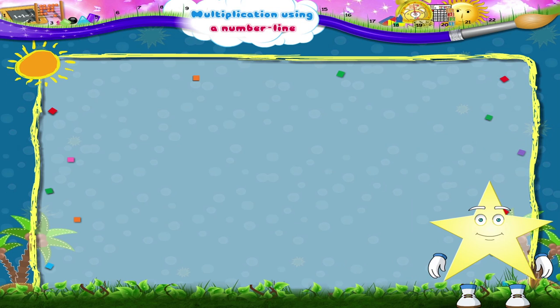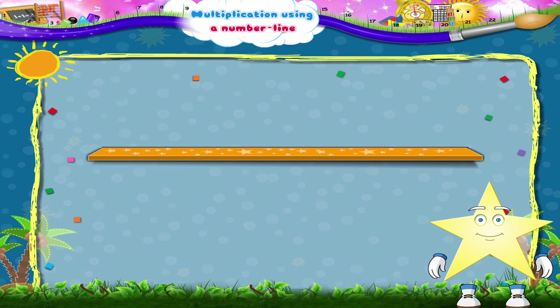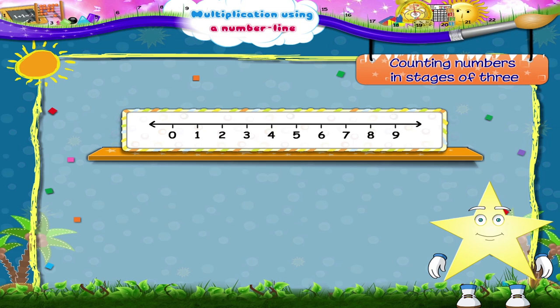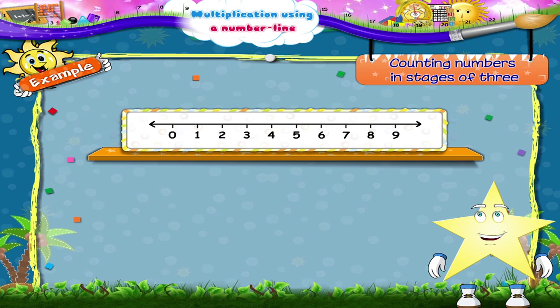Are you enjoying the game Starry? Okay, let us now stick the next strip. Starry, you have to jump forward by counting numbers in stages of three.